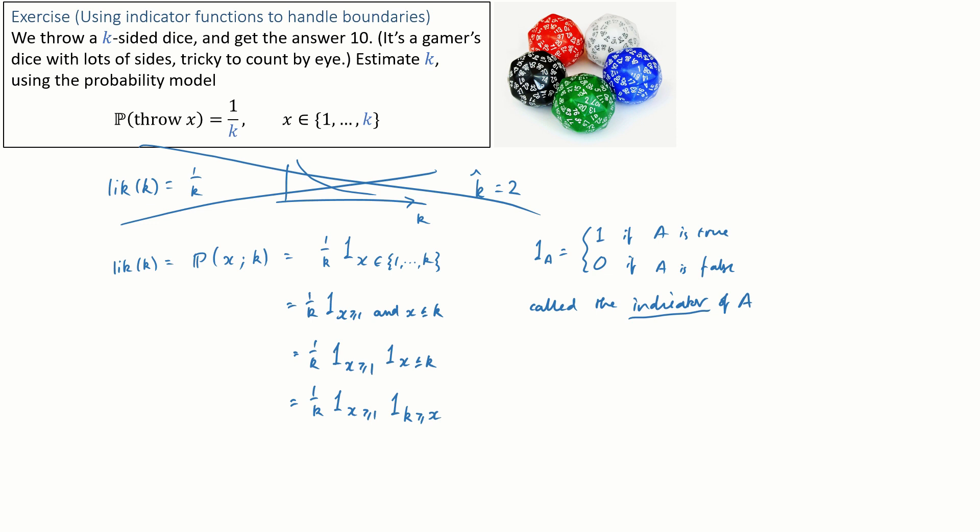I'm interested in maximizing this whole thing as a function of k and writing it this way just makes it easier for me to think through what's going on. So now I can plot this likelihood function. The likelihood is zero until we hit X and then it follows the one on k trajectory. That's what the indicator term here does. So the optimum is clearly k hat equals X.